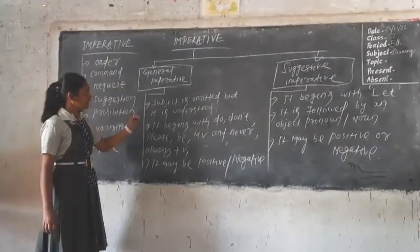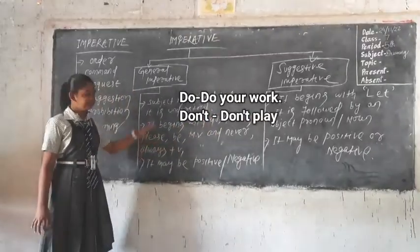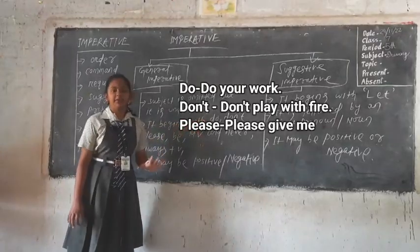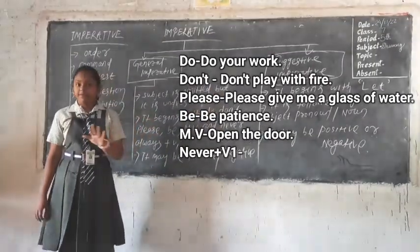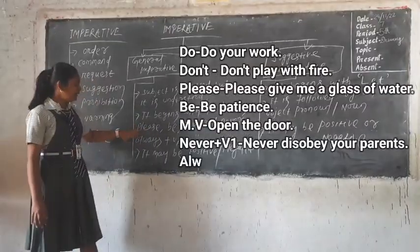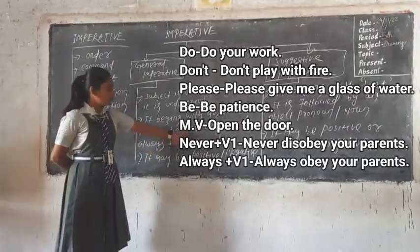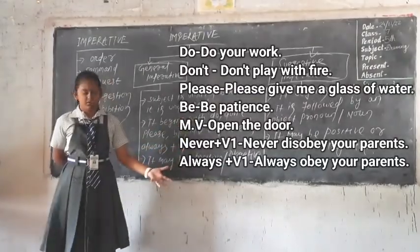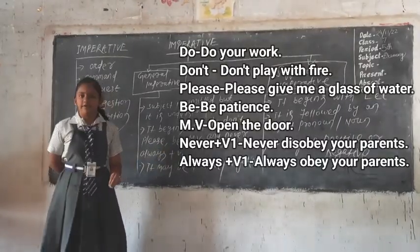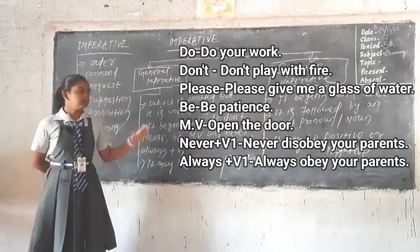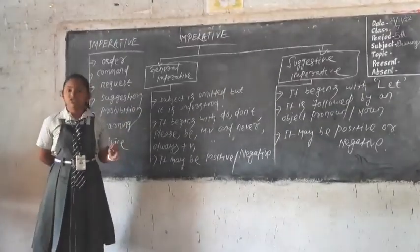Now we will learn how to form a sentence using general imperative. In general imperative, a sentence begins with specific words. For example: 'do your work' begins with do; 'don't play with fire' begins with don't; 'please give me a glass of water' begins with please; 'be patient' begins with be; 'open the door' uses the main verb; 'never disobey your parents' uses never plus verb 1; 'always obey your parents' uses always plus verb 1. These are some examples of general imperative sentences.